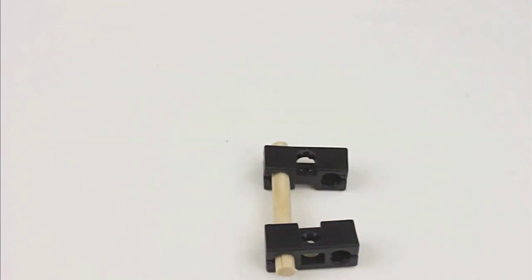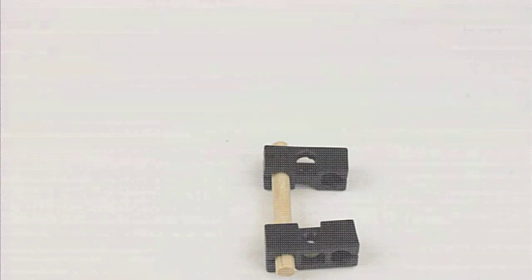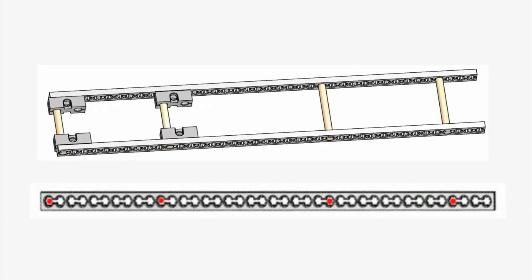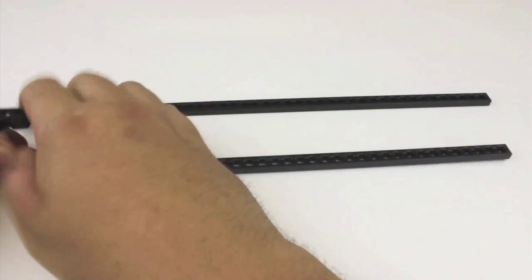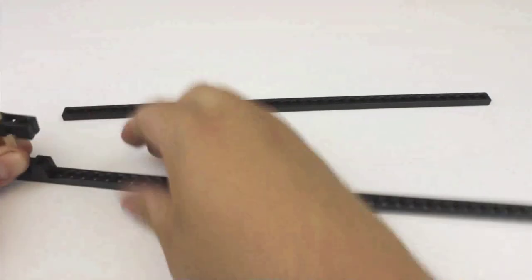Use another dowel and two more perpendicular blocks to build the same thing. Now place the dowels into the connector strips as shown above. You can put the parts into one side of the connector strip first and then add the second connector strip later.